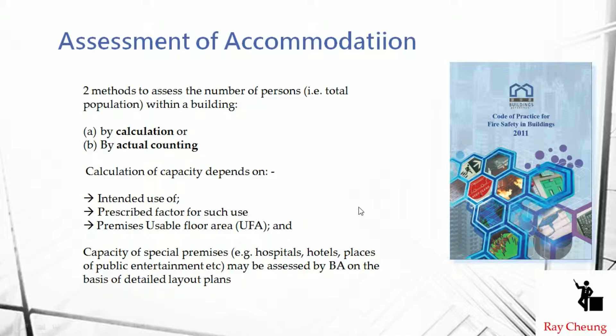For counting persons in Hong Kong, there are two methods. One is based on the Code of Practice for Fire Safety in Buildings, and the other is actual counting. For example, if you have a hotel or guest house, you count how many beds you provide. If you allow 10 guests and only provide 10 beds, then you count 10 persons only.